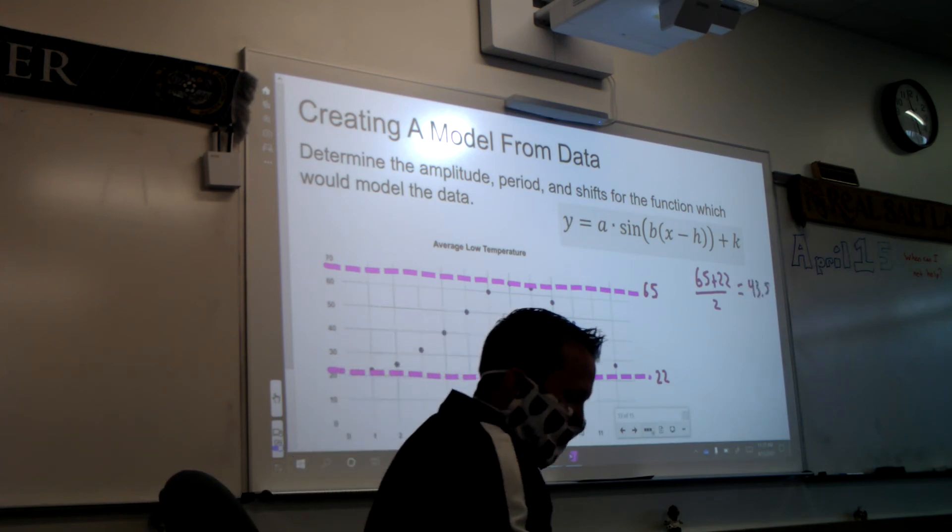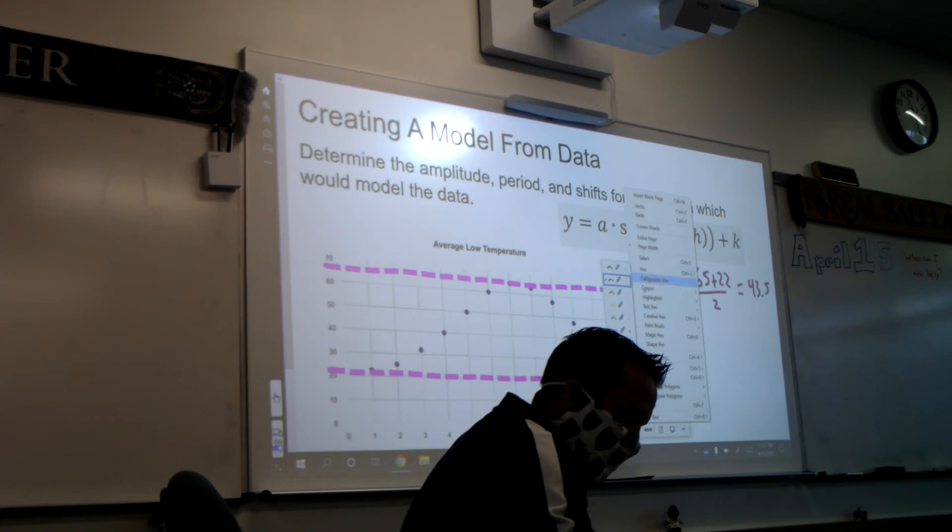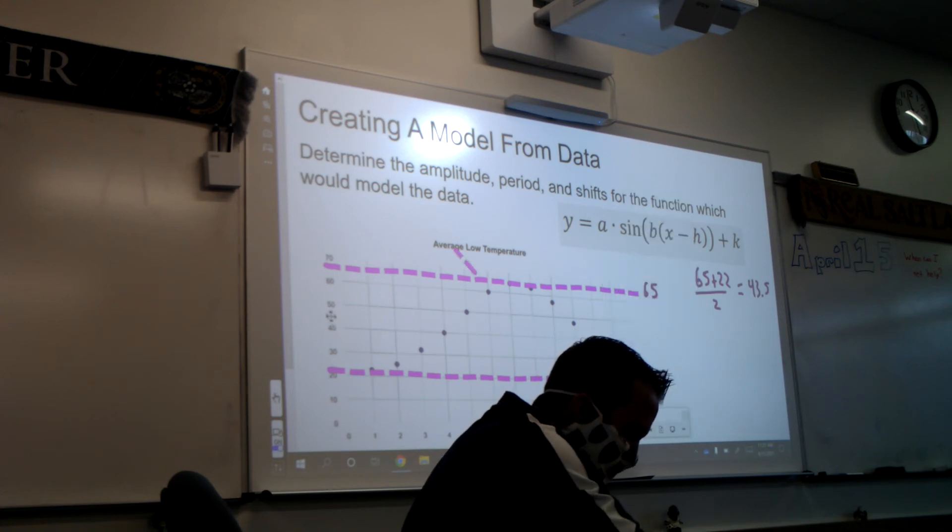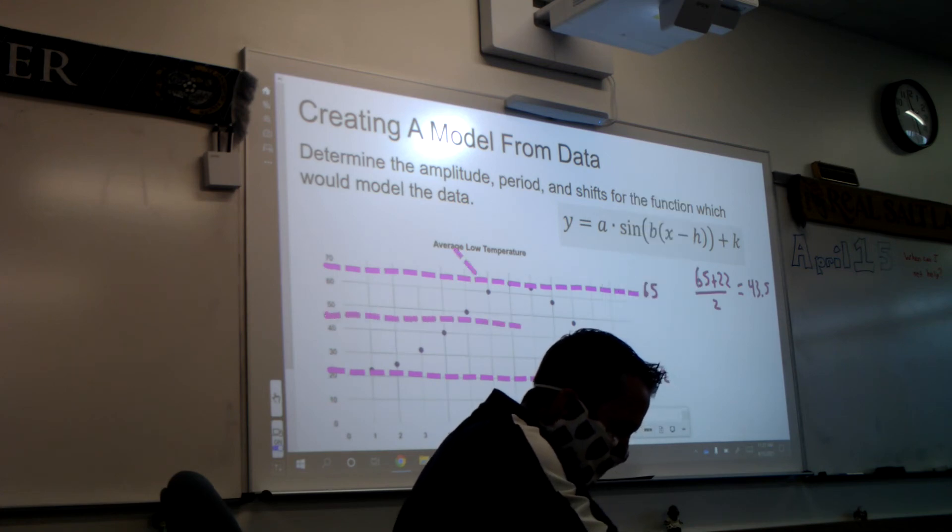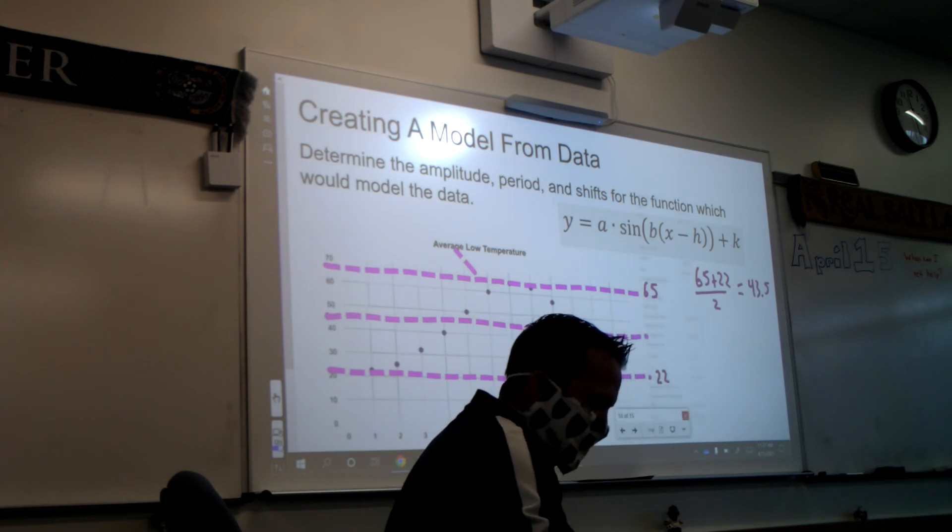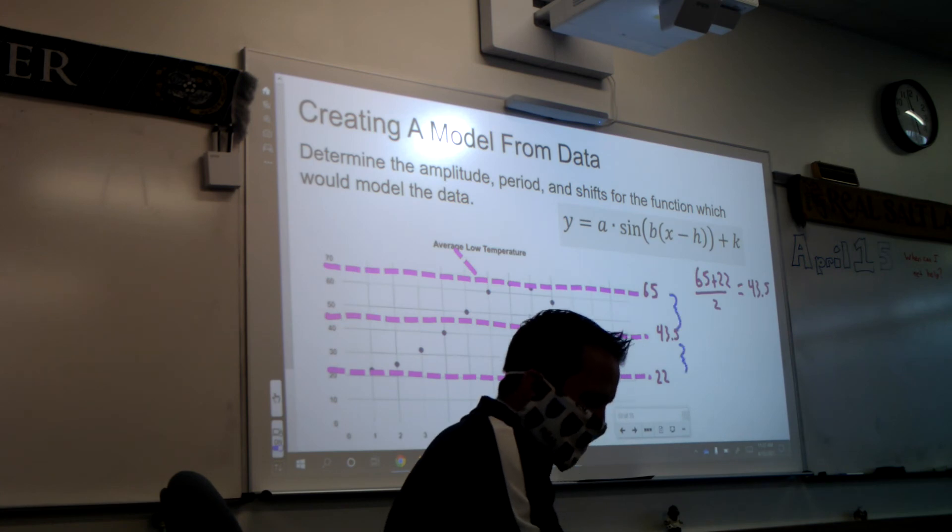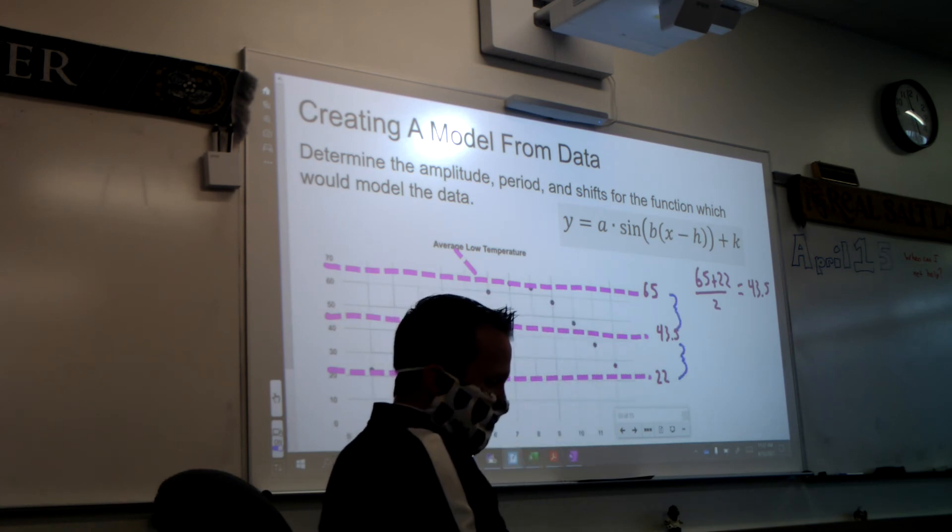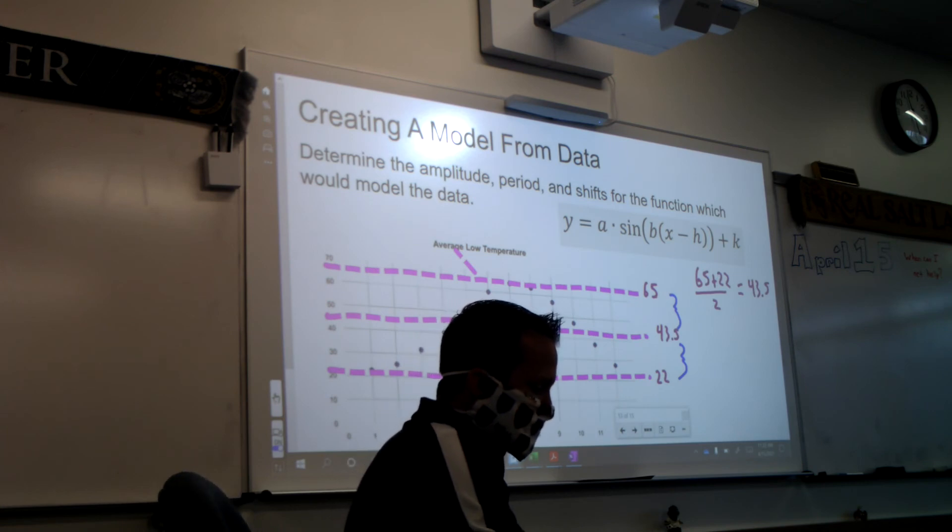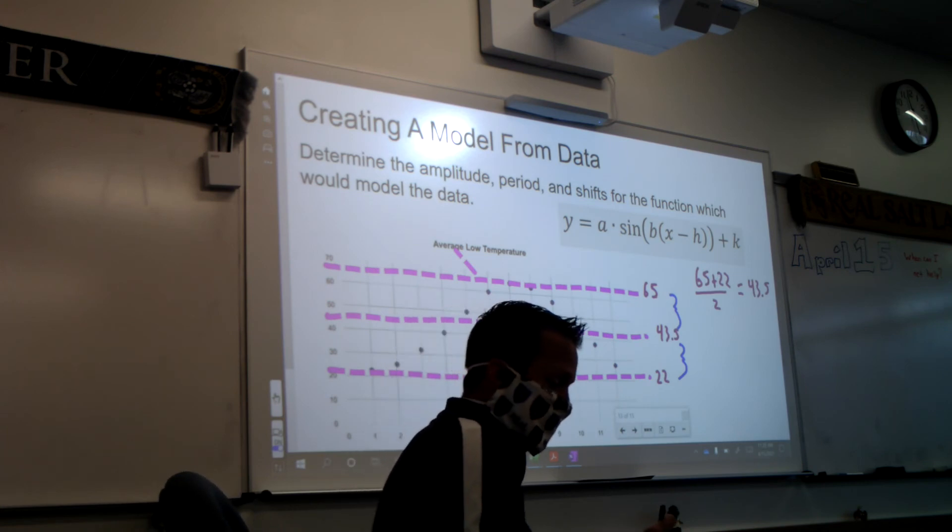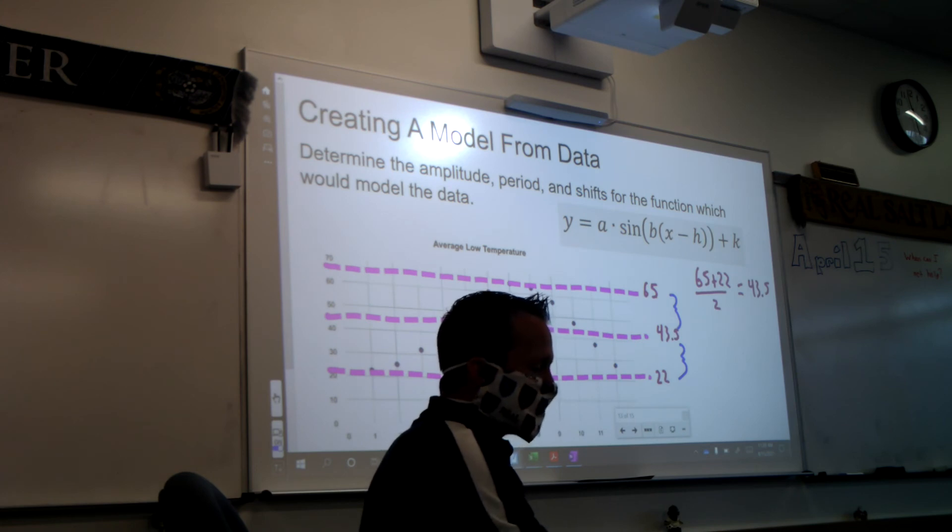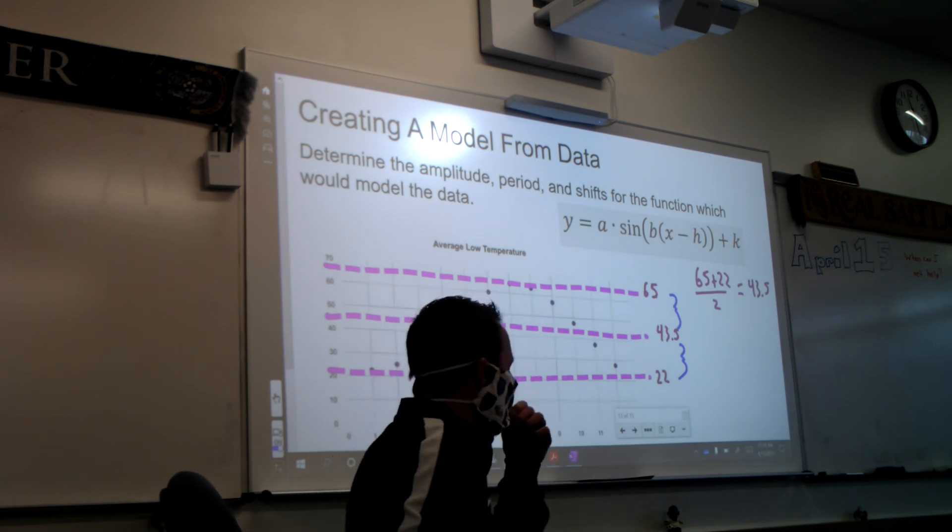So, forty-three point five, I'm going to say is right about here. That is our midline. Well, now, since I know my midline is forty-three point five, can I figure out what the amplitude is? Yeah, that's just going to be the distance between those two, which should match the distance between those two. Okay, now, next thing would be, how do you figure out the period? I'm not going to give you all the details here, but I want you to think, if we're talking about seasons, how long does it take to go through a cycle?